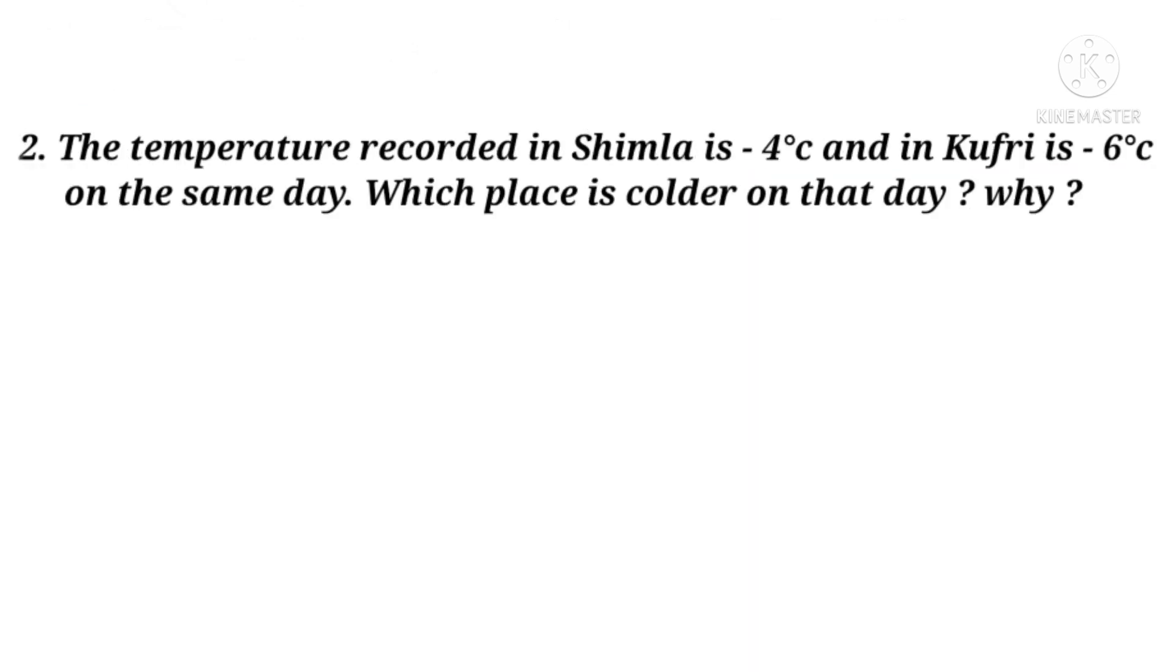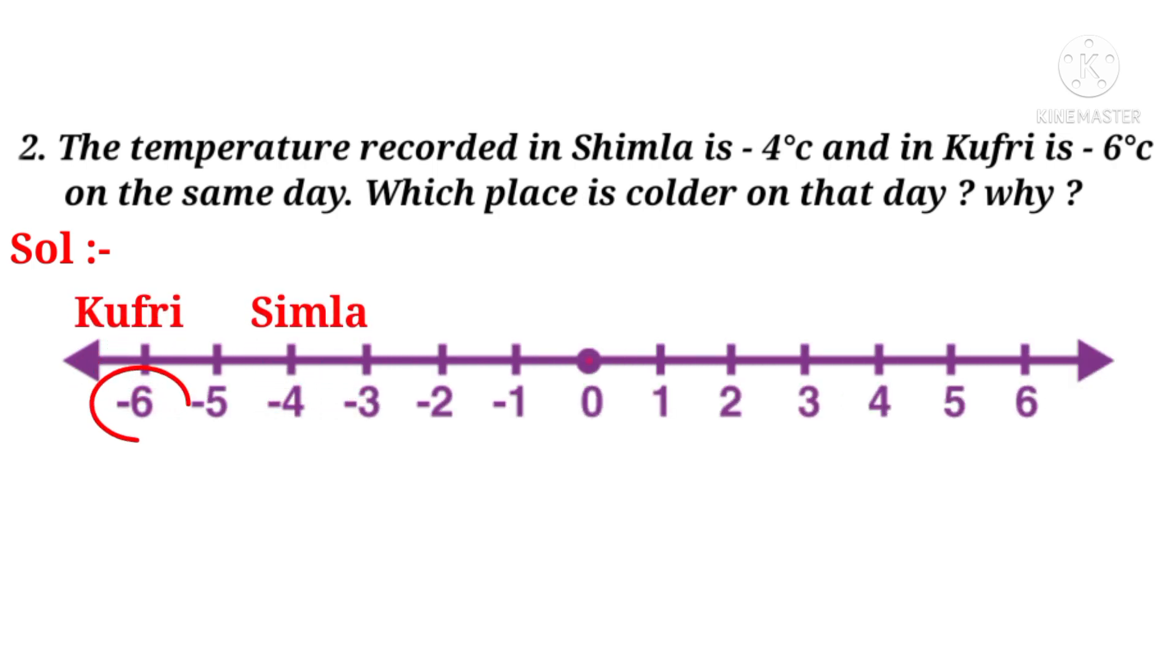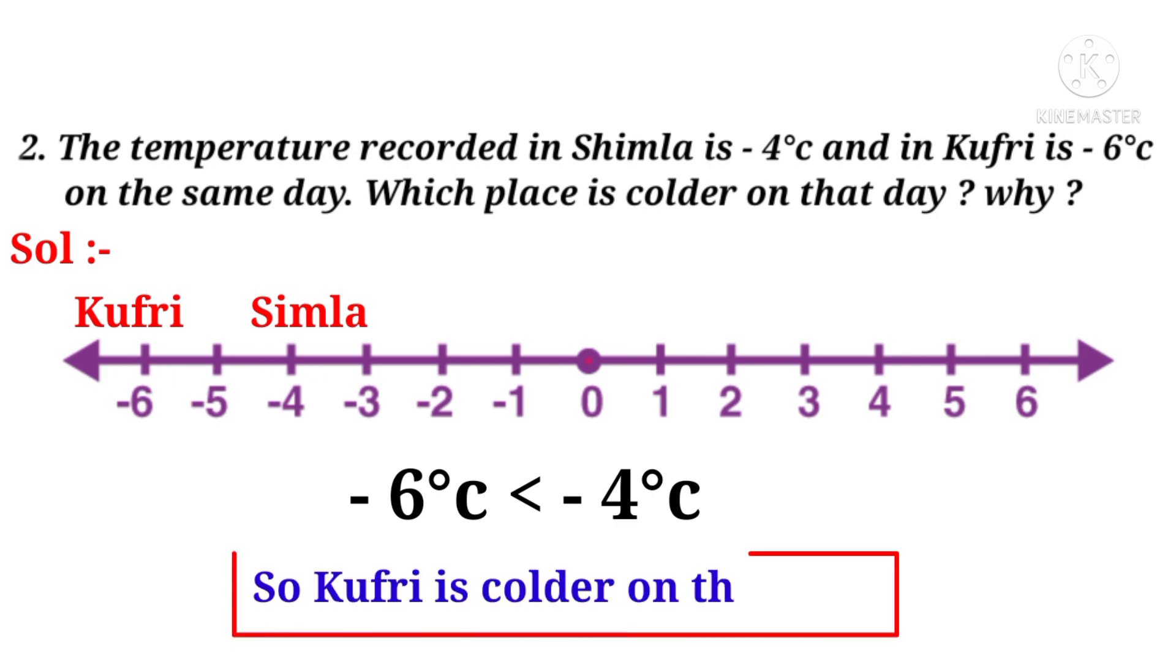Now second question. The temperature recorded in Simla is minus 4 degree centigrade and in Kufri is minus 6 degree centigrade on the same day. Which place is colder on that day and why? Solution: Take the number line of integers. Kufri is minus 6 which is on the left side of Simla minus 4. So minus 6 degree centigrade is less than minus 4 degree centigrade. Since minus 6 degree centigrade is smaller, Kufri is colder on that day.